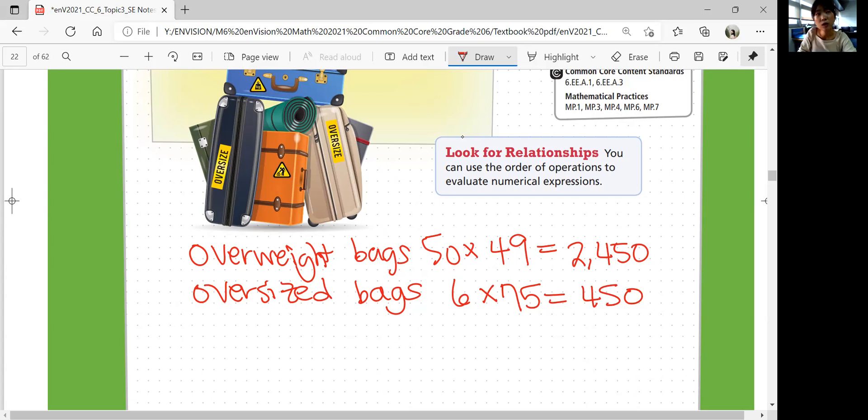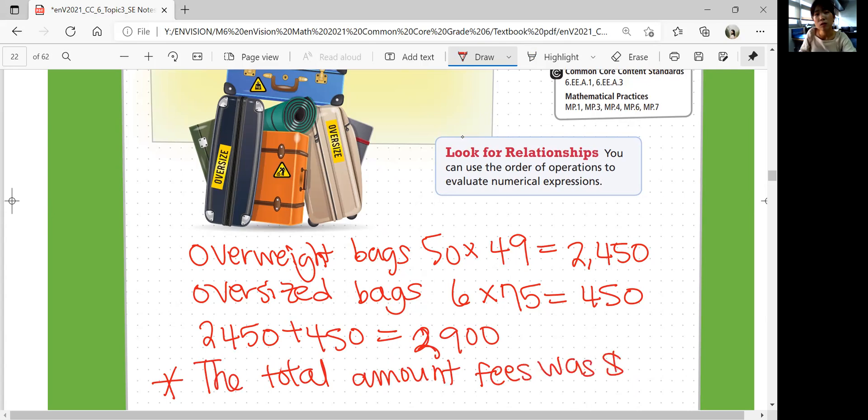So total, how much did it charge? You add $2,450 plus $450, which is $2,900. And your final answer is the total amount of fees were $2,900.